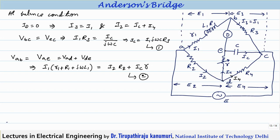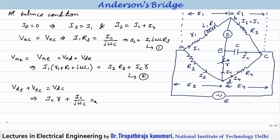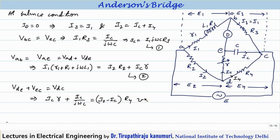Similarly, VDE plus VEC equals VDC. VDE is IC·R, and VEC is IC/(jωC). VDC equals I4·R4, and I4 equals I2 minus IC. So equation number 3 is: IC·(R + 1/(jωC)) = (I2 − IC)·R4.